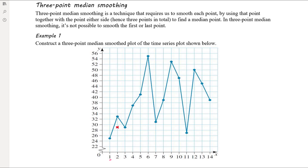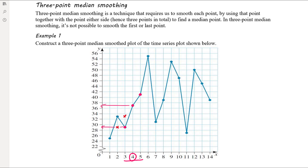For the smooth value at x equals three, we consider the point at x=3 and one point either side. The median x value is clearly three, and the median y value — looking at those three y values — is clearly 33. So the smooth point is at x equals three, y equals 33. Moving to x equals four: considering the points at x=3, x=4, and x=5, the middle x value is four and the middle y value is clearly 37.